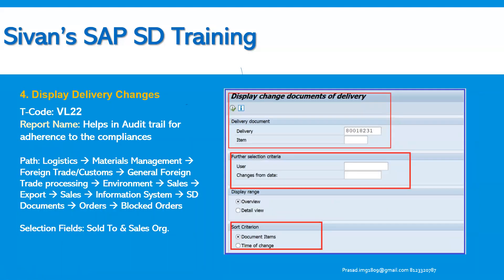Number four is Display Delivery Changes. This is one of the important and key features. In real time, users sometimes change values in documents without informing us. We have a useful transaction code VL22, which helps with audit trail and adherence to compliance. Alternatively, we can go to VL03N or VL02N, input the outbound delivery, then go to Environment > Changes to find the same information. This helps us find out what changes were made and why.